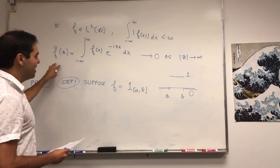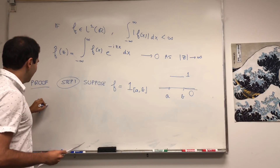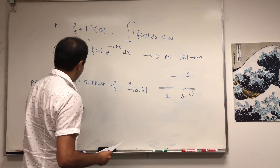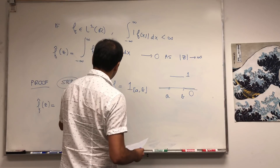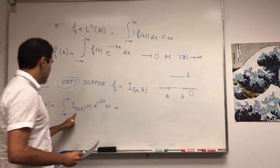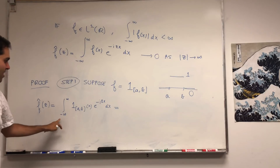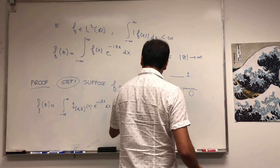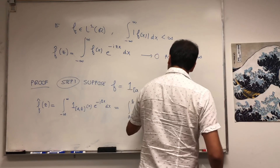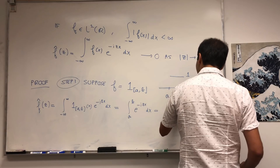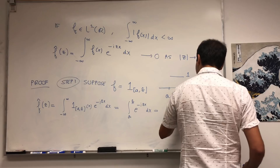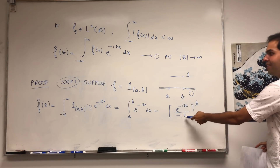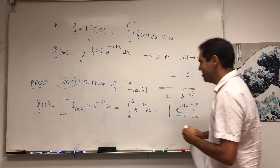It's not what a simple function is — simple functions come later. Let's calculate the Fourier transform. f-hat of z becomes the integral from minus infinity to infinity of the indicator function of [a, b] of x times e^{−izx} dx. Since this function is one on [a, b] and zero everywhere else, we're actually just integrating from a to b: the integral from a to b of e^{−izx} dx. You can find an antiderivative: e^{−izx} over (minus iz), evaluated from a to b. Since z goes to infinity, we can assume it's non-zero, so it's okay to divide by it.